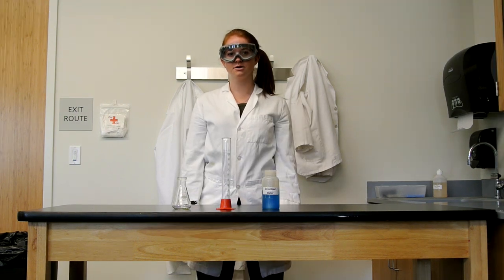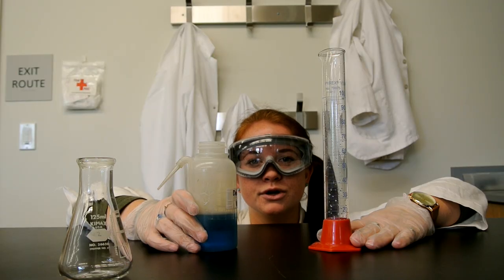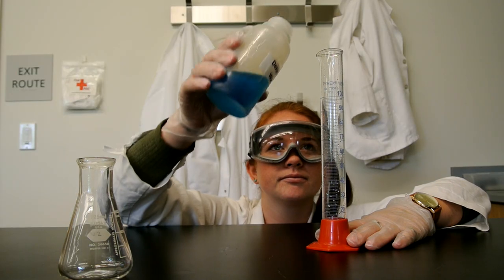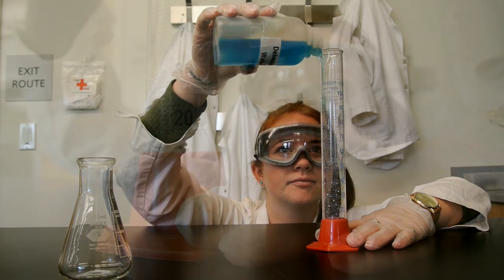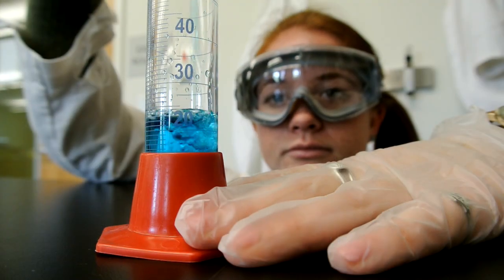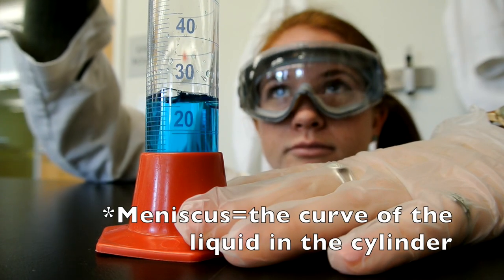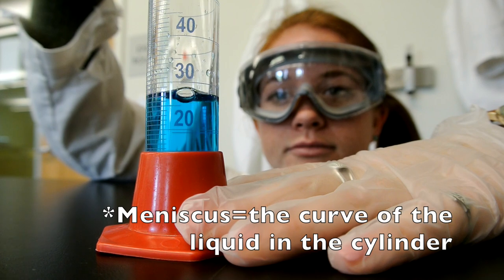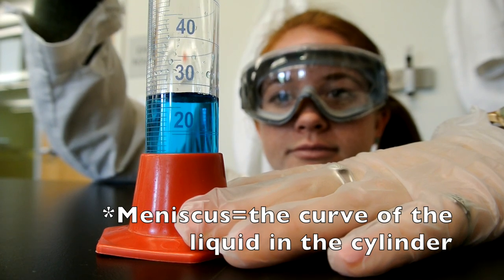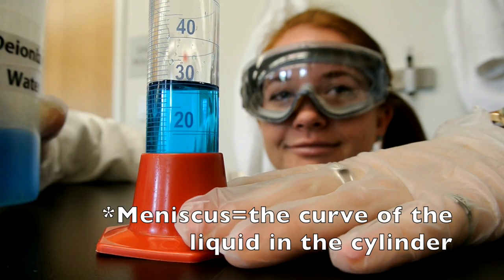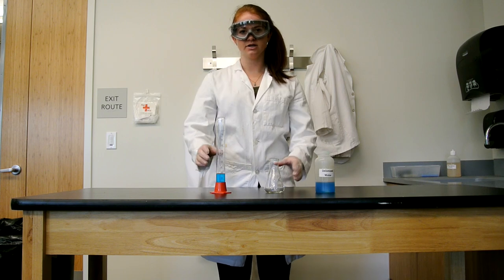Be at eye level while pouring so you can see the bottom of the meniscus reach the line of desired measurement. I'm going to measure out 30 milliliters of deionized water. Now, transfer your solution into the flask.